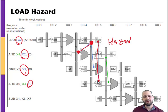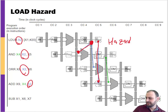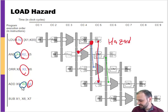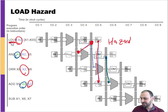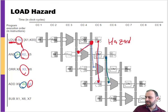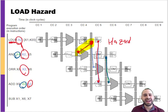The only problem we cannot solve with forwarding alone is the load instruction when it is immediately followed by an instruction that reads the register being written. That creates the time-travel problem — we'd need the value before it's available — unless we introduce a stall.